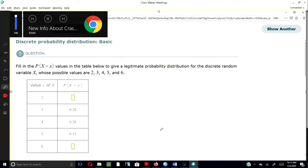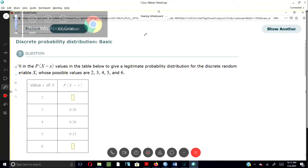Fill in the P(X=x) values in the table below to give a legitimate probability distribution for the discrete random variable X, whose possible values are 2, 3, 4, 5, and 6. You can see the values of X are given here: 2, 3, 4, 5, 6, and the probabilities are given here.